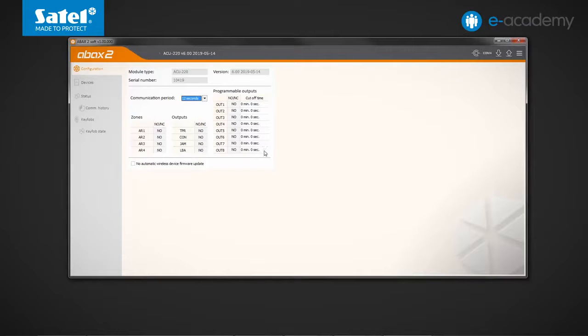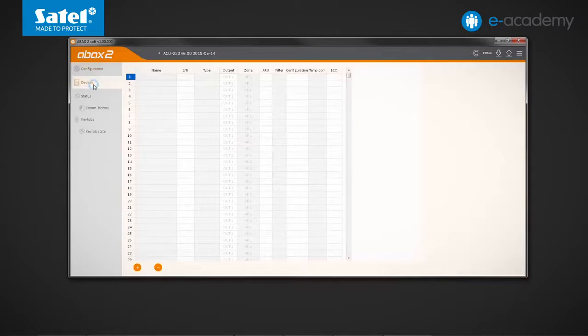As for the outputs, you can also specify their operation time in the table. When controlled with a key fob, they behave as a mono switch and are turned on for the specific time. If zeros only are left there, the output will behave like a bi-stable switch when controlled with a key fob. Under the tables, there is a no automatic wireless device firmware update checkbox. By selecting this option, the firmware of wireless devices enrolled into the controller will not be updated automatically. Now let's go to the devices tab. The ACU-220 controller can support up to 48 wireless devices.